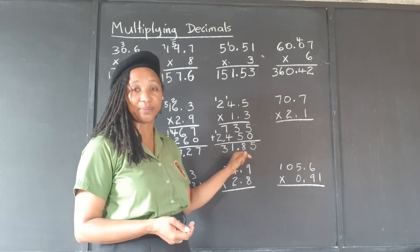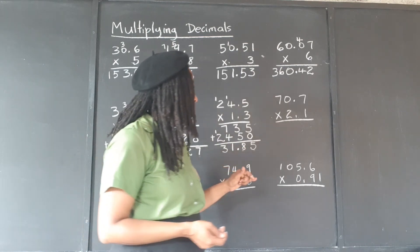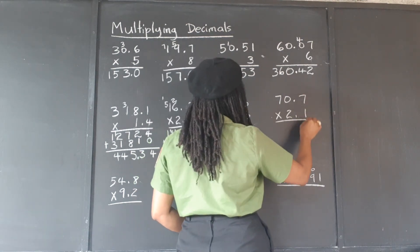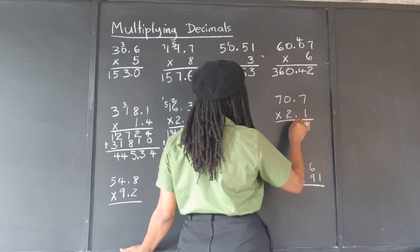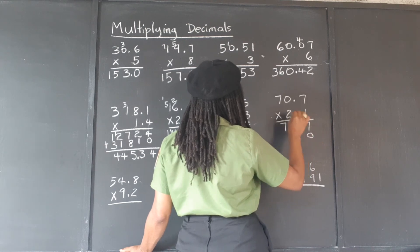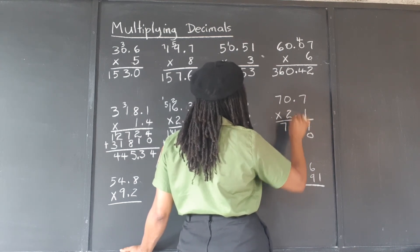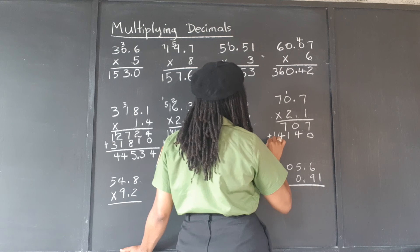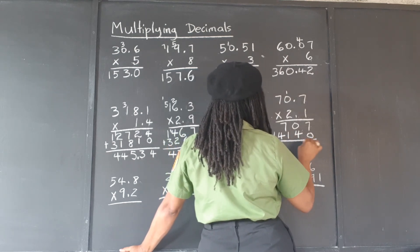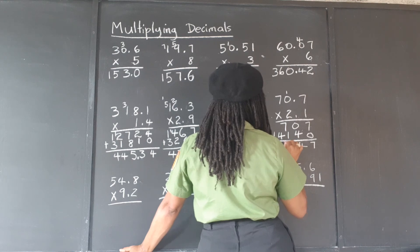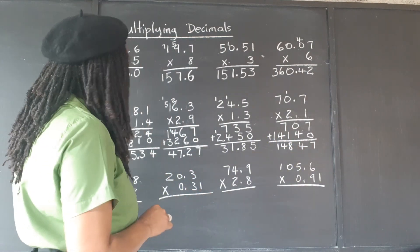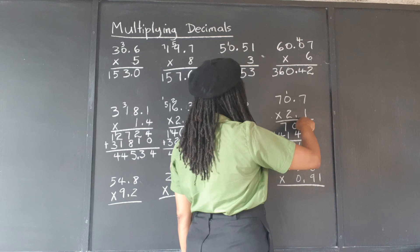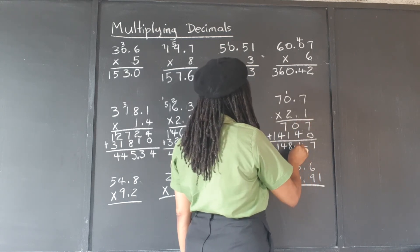So we have 70.7 and we're multiplying that by 2.1. 1 times 7 is 7. 1 times 0 is 0. 1 times 7 is 7. Put our placeholder. 2 times 7 is 14. 2 times 0 is 0, plus 1 is 1. And 2 times 7 is 14. Now we add: 7 plus 0 is 7. 0 plus 4 is 4. 7 plus 1 is 8. Bring down 14. We had 1 plus 1, so 2 decimal places in all — 1, 2 — and we put our point there.